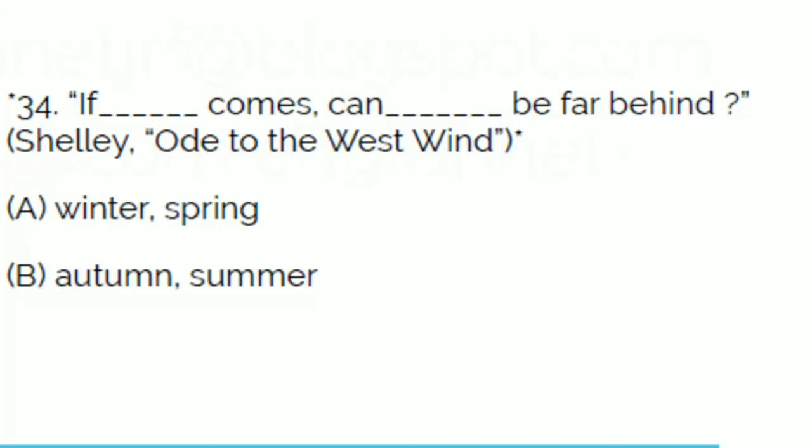In Shelley's 'Ode to the West Wind,' the line 'If winter comes, can spring be far behind?' references which two seasons? A: Winter and Spring, B: Autumn and Winter, C: Autumn and Spring, or D: Autumn and Summer. Your answer is A — Winter and Spring.